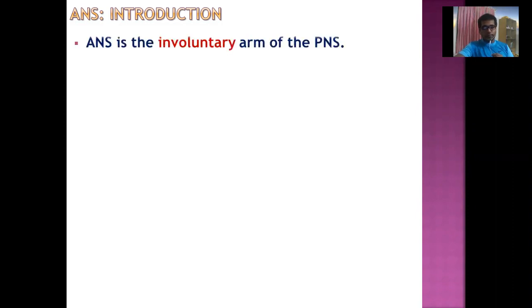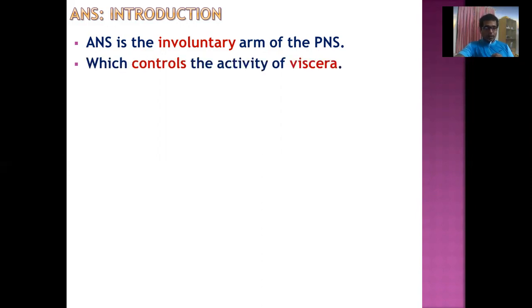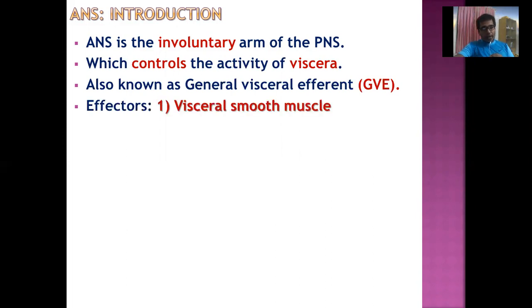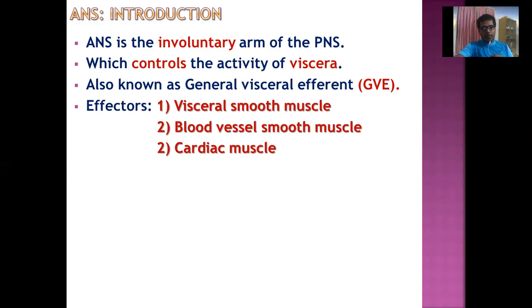Let's have a short introduction about Autonomic Nervous System. The Autonomic Nervous System is the involuntary arm of the peripheral nervous system — it is not under the control of your will; it is controlled involuntarily. It primarily controls the activity of the viscera, which is why it is also known as the General Visceral Efferent. The effectors for the ANS are visceral smooth muscle, cardiac muscle, and glands.